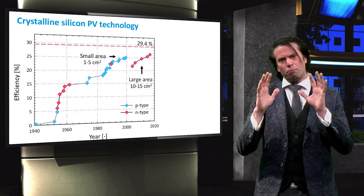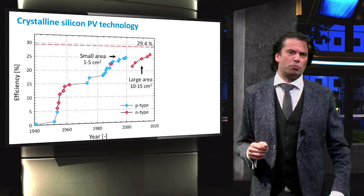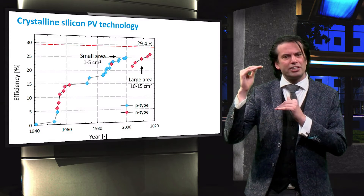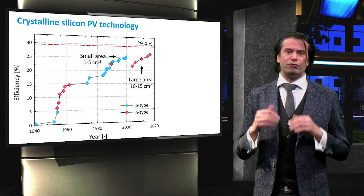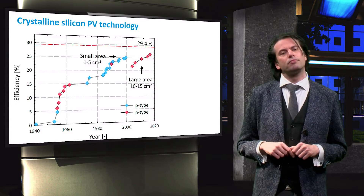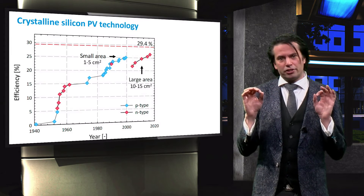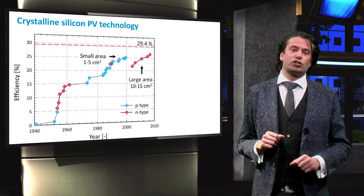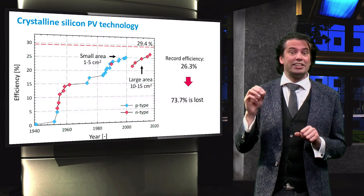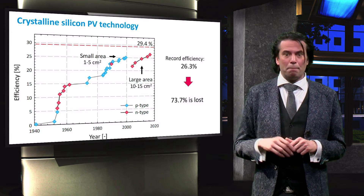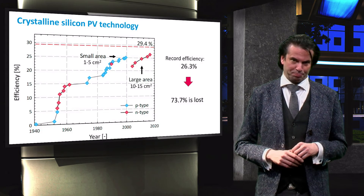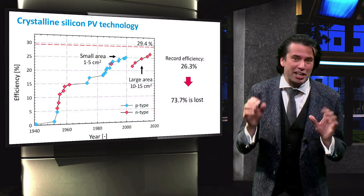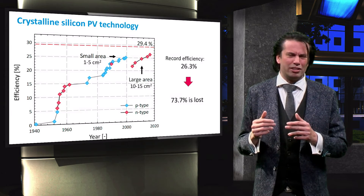We will learn more about the theoretical limits of solar cell performance in the final week of this course. The closer we get to this limit, the harder it will be to further improve the performance of the cells. The current record efficiency as of December 2016 of single-junction crystalline silicon solar cells is set at 26.3% by the Kaneka Corporation. This still means, however, that 73.7% of the power incident on a solar cell is lost.